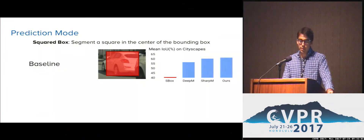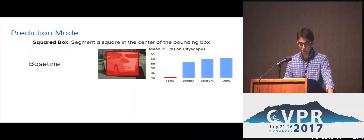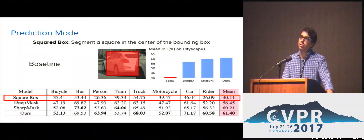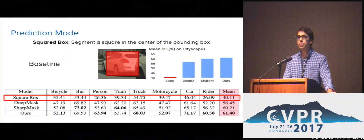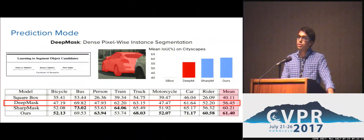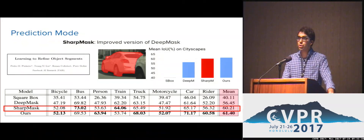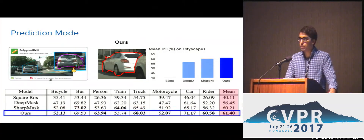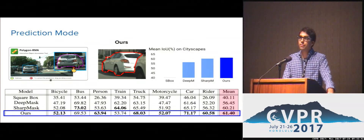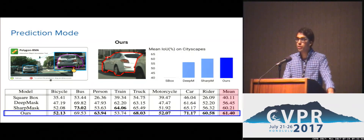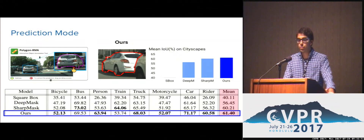On the right, I show a graph indicating the mean IOU obtained across all categories for each of the models, while on the bottom I show the detailed IOU metric for each category. Higher IOU means that the prediction is closer to the ground truth annotation. We compare to two state-of-the-art instance segmentation models: DeepMask, which produces dense pixel-wise instance segmentations, and SharpMask, which is an improved version of DeepMask that operates at a higher output resolution. Polygon RNN performs better than these models — we beat SharpMask in five out of eight categories and obtain an improvement of 1% in mean IOU. Furthermore, Polygon RNN produces segmentations in the form of polygons, which a user can easily interact with.